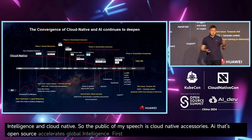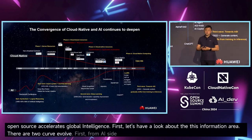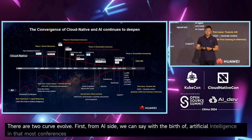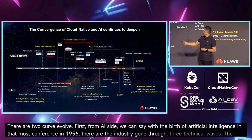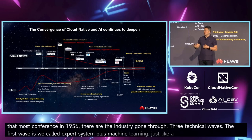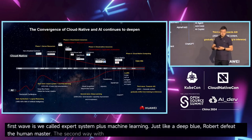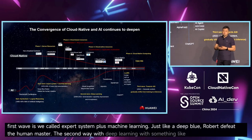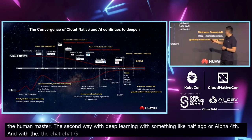Let's have a look at this information era. There are two curves. From the AI side, we can see that with the birth of artificial intelligence at the Dartmouth Conference in 1956, the industry has gone through three technical waves. The first wave is the expert system plus machine learning, just like Deep Blue defeating the human chess master. The second wave is deep learning, such as AlphaGo. And when ChatGPT came, it evolved to the third wave.